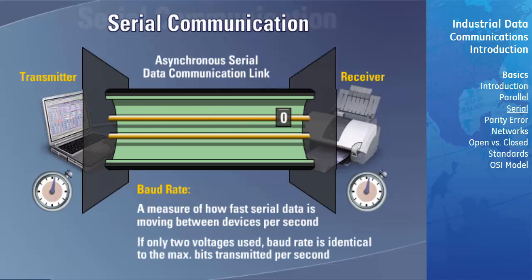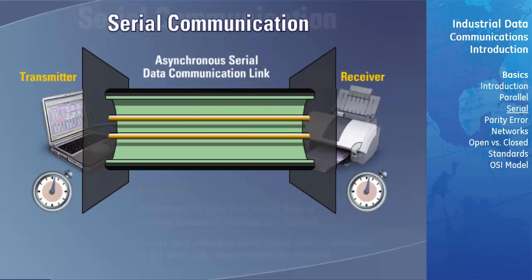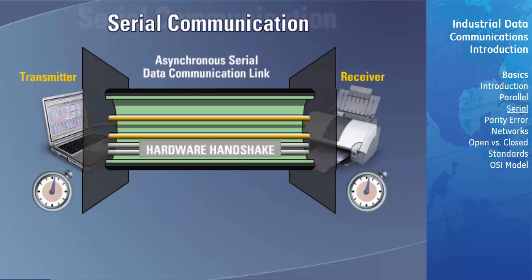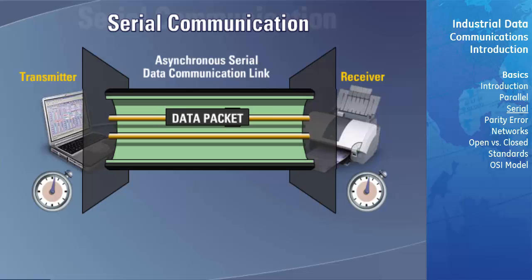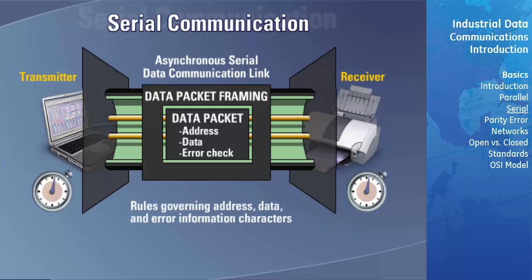If only two voltages are used to transfer the bits between the devices, the baud rate is identical to the maximum number of bits of information transmitted per second. In the past, a serial link had additional wires used to establish a hardware handshake. Today, most modern microprocessor-based devices such as GE Multilin relays support a software handshake, so these extra signals are not needed. The characters transferred between the two devices are usually transmitted one after the other in a short burst referred to as a data packet. Data packets contain an address, data, and error check characters. Rules that govern which characters are the address, data, and error information are called the data packet framing.